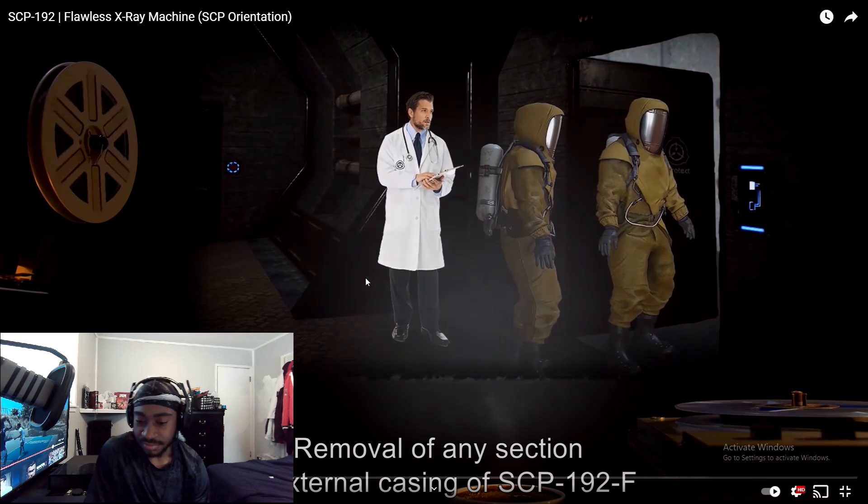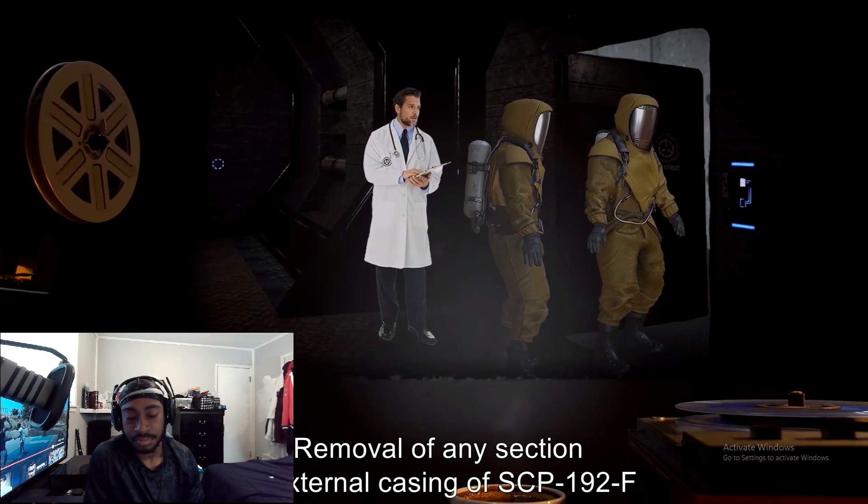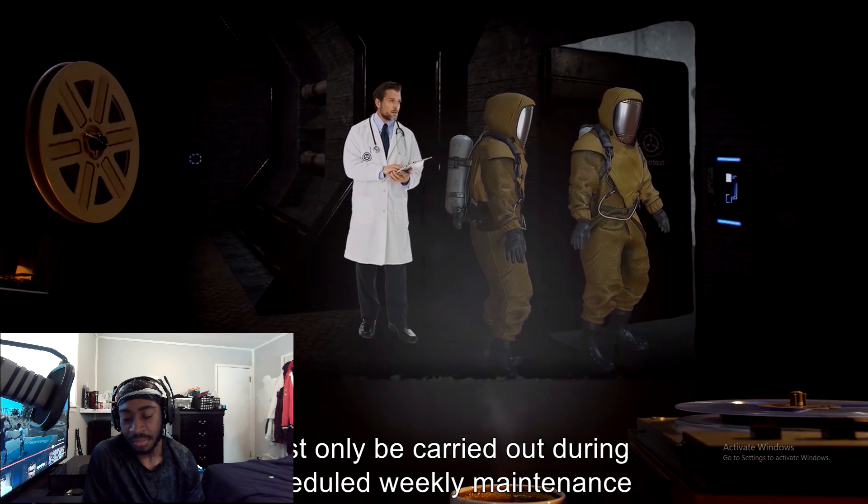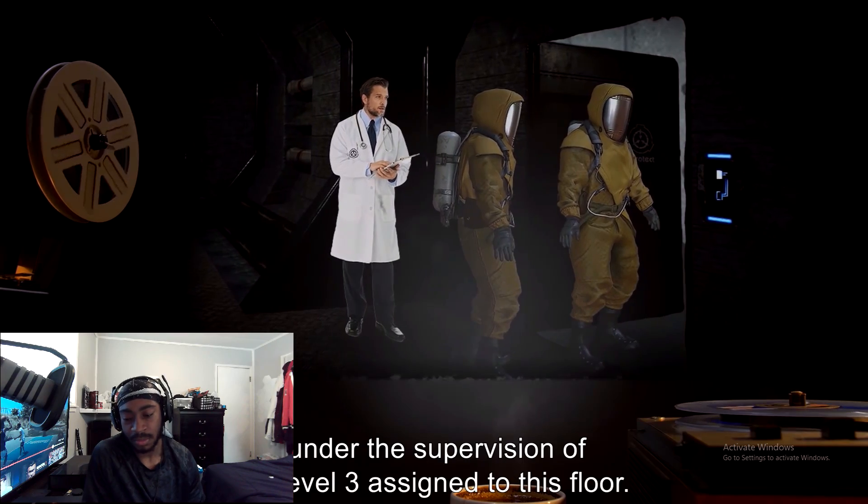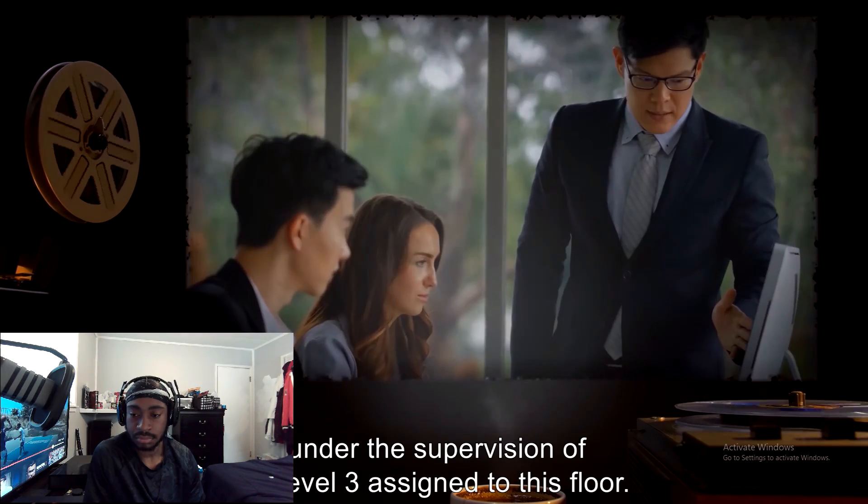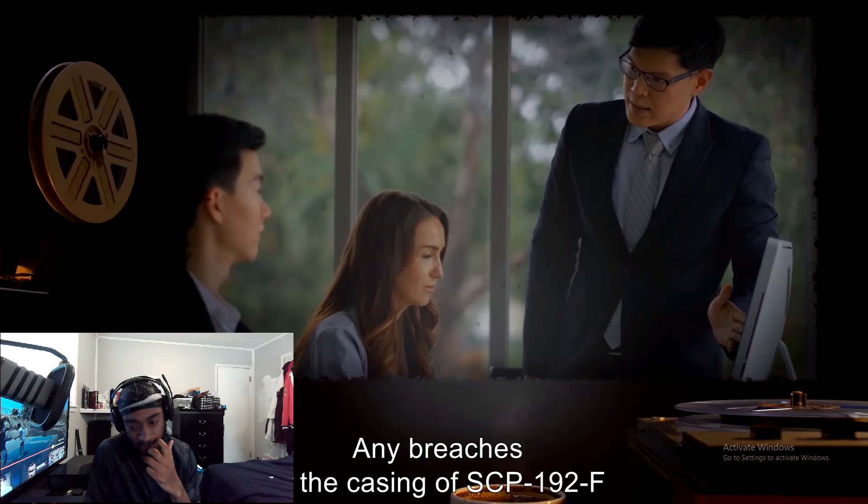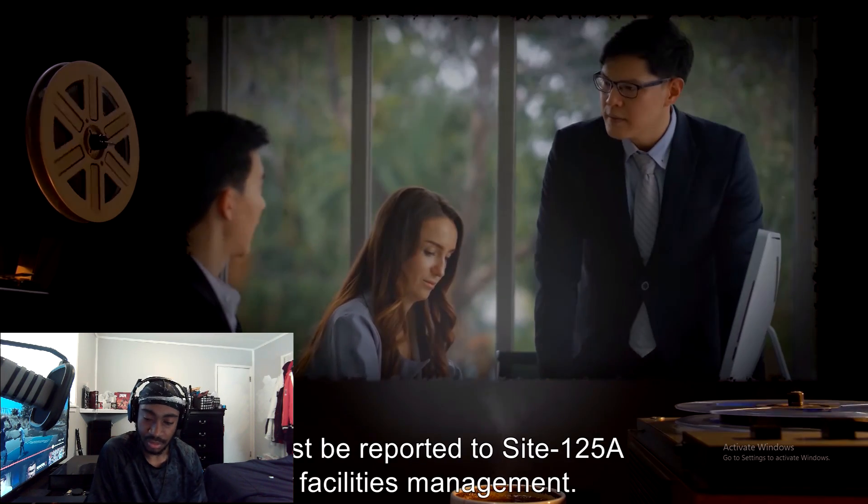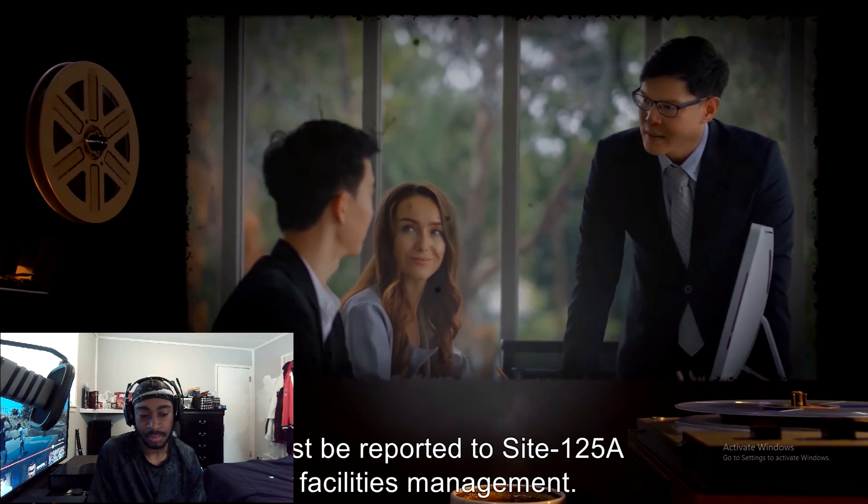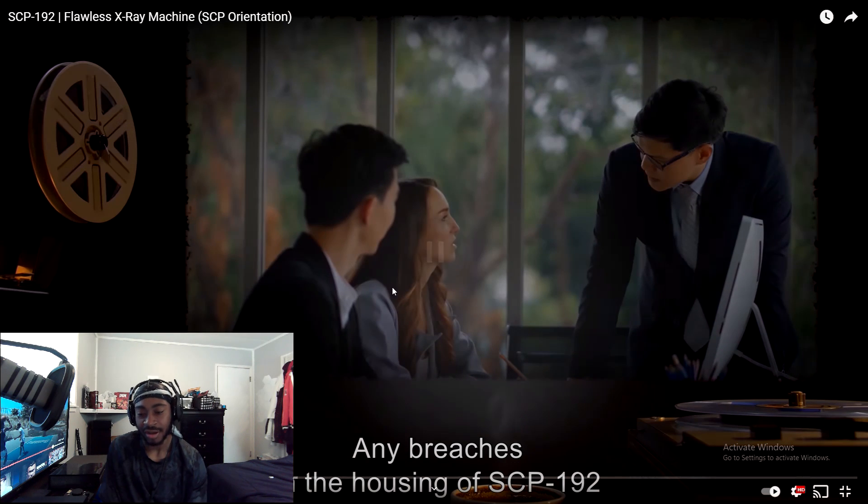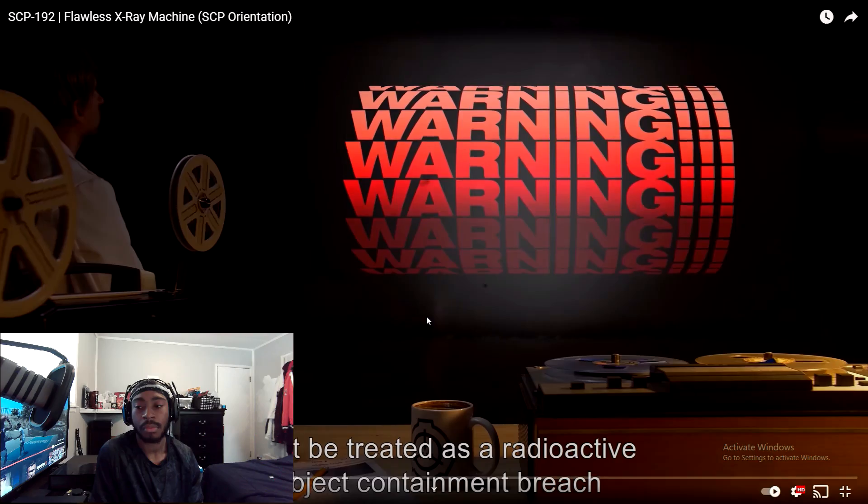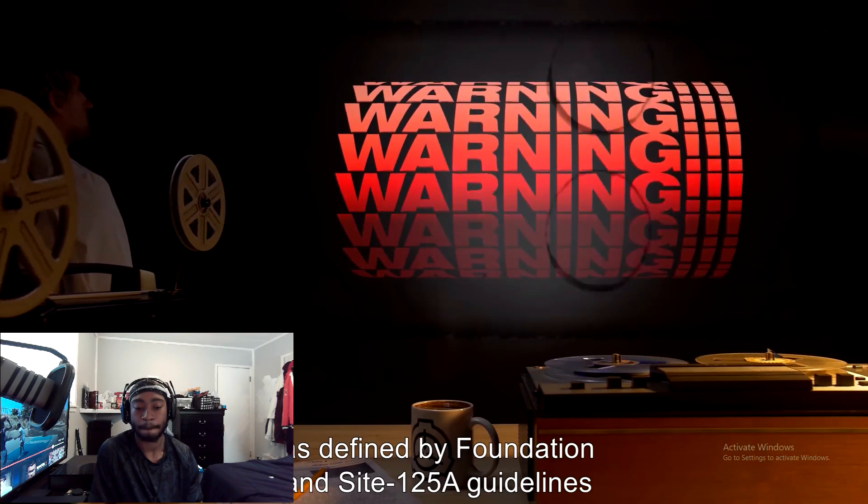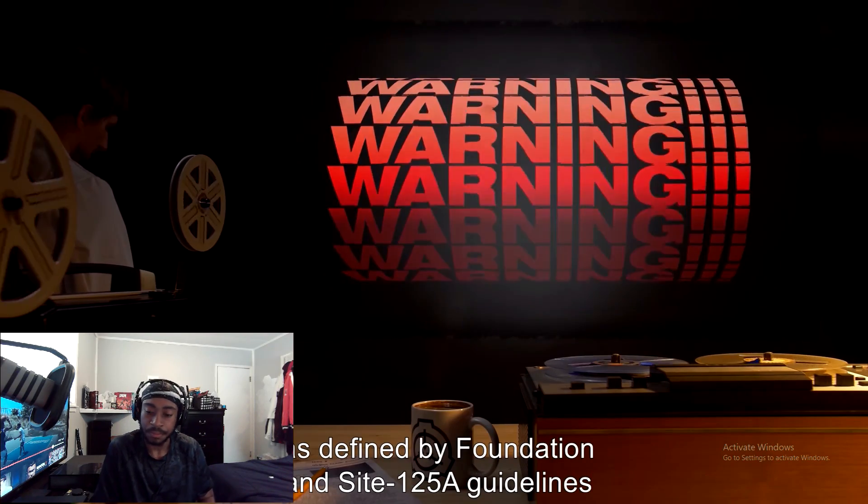An inspection of Room 924's radiation proofing and the Geiger counters must be carried out fortnightly. The housing for SCP-192 must not be breached under any circumstances. Removal of any section of external casing of SCP-192-F must only be carried out during scheduled weekly maintenance by level 2 staff under the supervision of a level 3 assigned to this floor. Any breaches in the casing of SCP-192-F must be reported to Site-125-A facilities management. Any breaches in the housing of SCP-192-F must be treated as a radioactive object containment breach as defined by Foundation and Site-125-A guidelines.